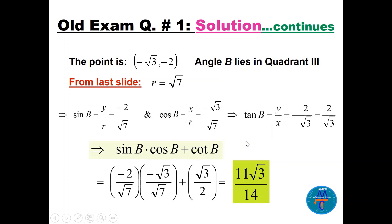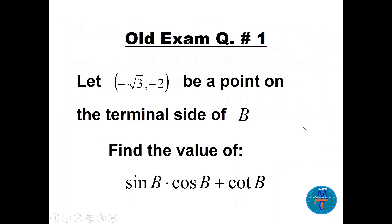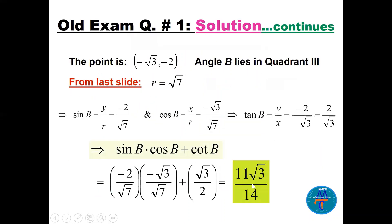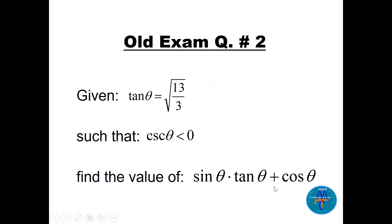Cot(b) is the reciprocal of tan(b), so cot(b) = √3/2. Finding the LCD and combining terms, the answer is 11√3/14.